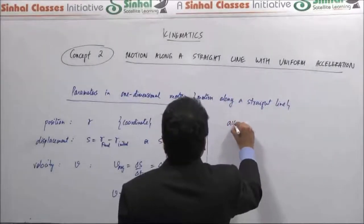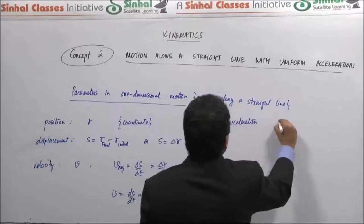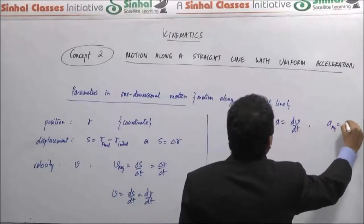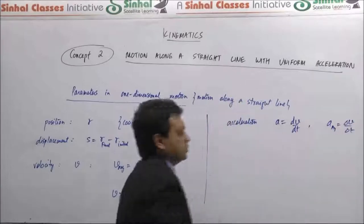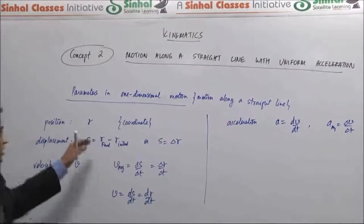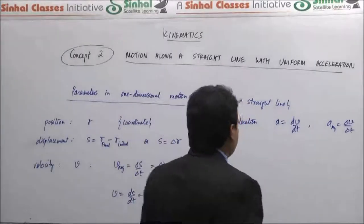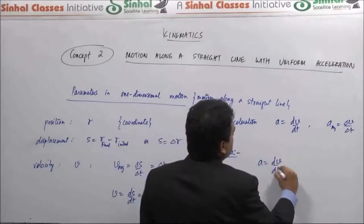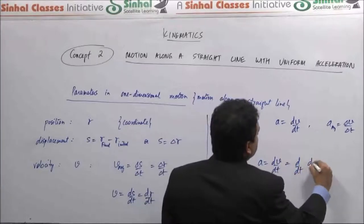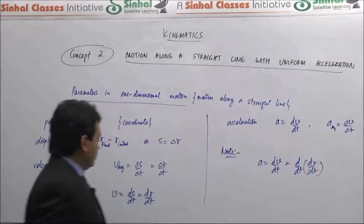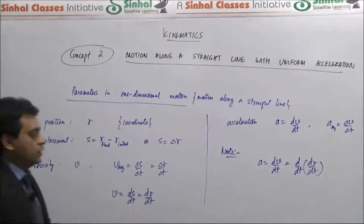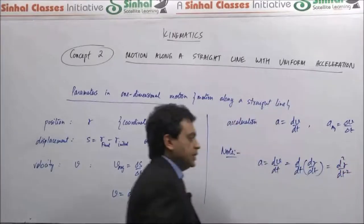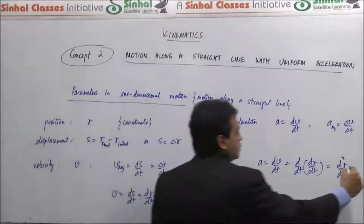Similarly, acceleration a is defined as dv/dt, whereas average acceleration is delta v over delta t. These are the standard parameters: position, displacement, velocity, and acceleration. Acceleration, which is dv/dt, can also be written as the rate of change of rate of change of position, since velocity is the rate of change of position. So instantaneous acceleration can also be defined as the second derivative of position or displacement — this is an important alternative formula.